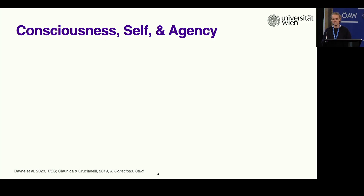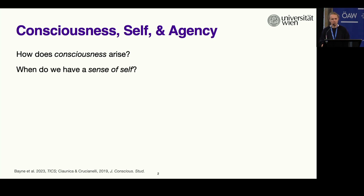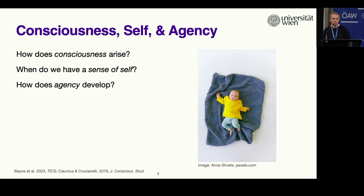I want to start by briefly reiterating what we have already been talking about a lot, which is how do we understand consciousness, self, and agency. However, I want to make the point that we need to consider this in a developmental setting. So how does consciousness arise? When do we start to have a sense of self? And how does agency develop? In my PhD research, I'm trying to contribute to this by considering how infants perceive the world.